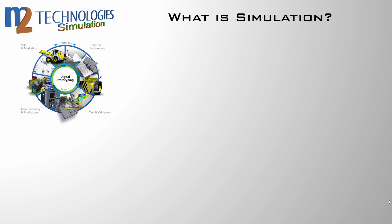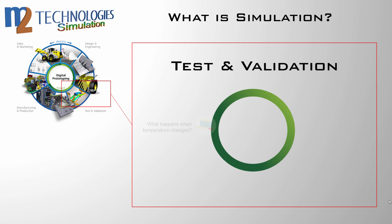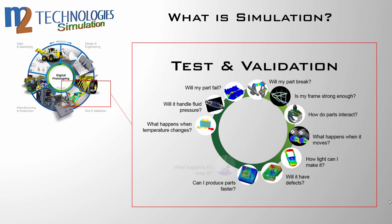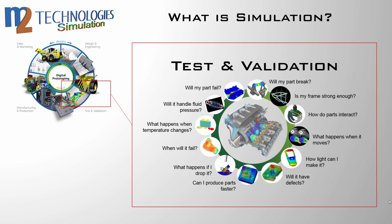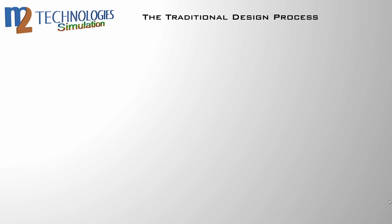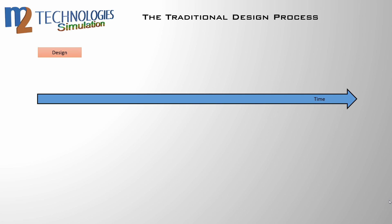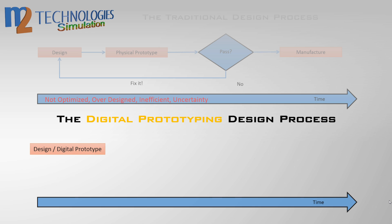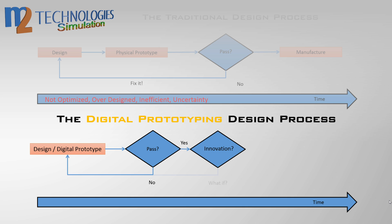Simulation takes place in the test and validation phase of the digital prototyping process. This is the phase where critical questions need to get answered — questions like: will my part break? How light can I make it? What happens when the temperature changes? These questions have traditionally been answered by building a physical prototype for testing, a costly and time-consuming process. Leveraging your digital prototype and the Autodesk simulation software portfolio, products can be tested in a virtual environment, thereby reducing or eliminating costly physical prototype iterations.